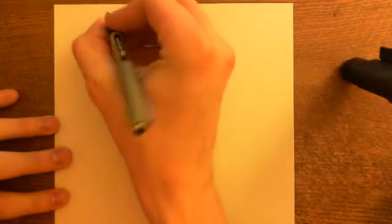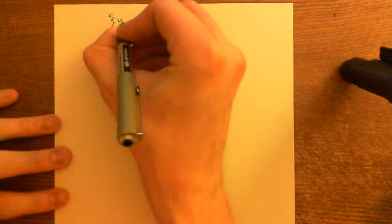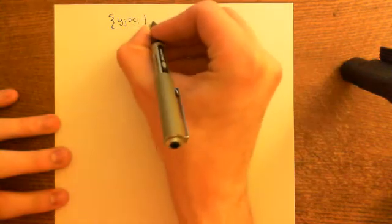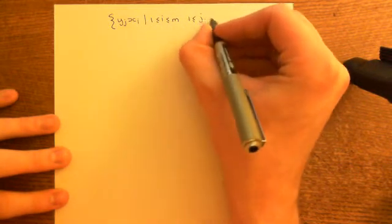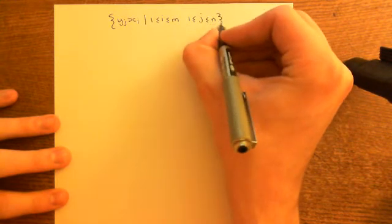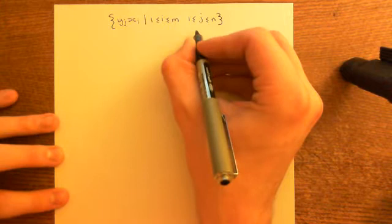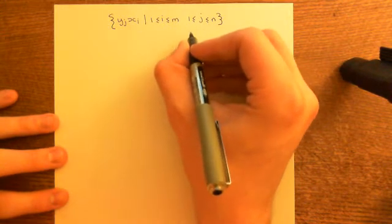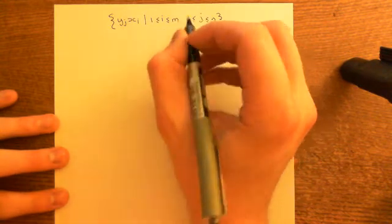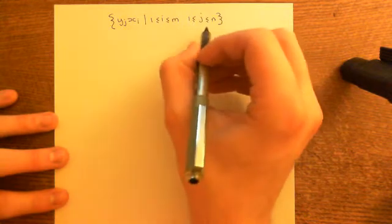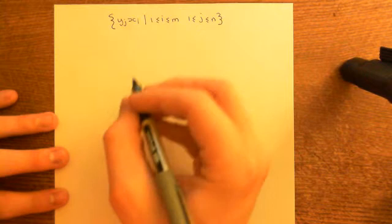Welcome to this next video in which we are discussing the degree of a field extension and the tower law. We have just proven that this set, which contains all things of the form yⱼxᵢ — where i can vary between 1 and n, and j can vary between 1 and n — is a basis for the vector space of M over the scalar field K. Specifically, we have just proven that it spans. What we now want to prove is that this is linearly independent — that all of these elements are linearly independent.